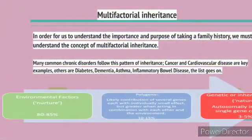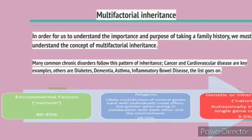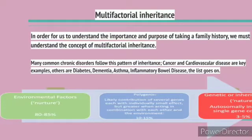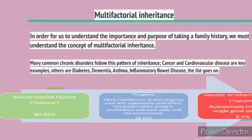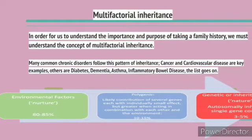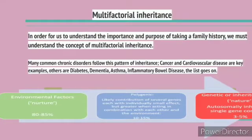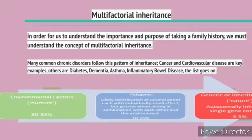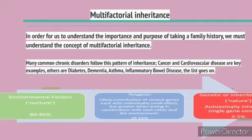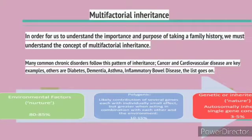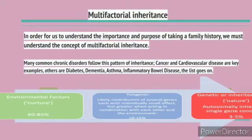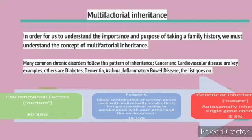We are continuing with multifactorial inheritance. In order for us to understand the importance of family history, we must understand the concept of multifactorial inheritance. Many chronic diseases follow in families — for example, cancer and cardiovascular disease; other examples could be diabetes, dementia, asthma, and inflammatory bowel disease.